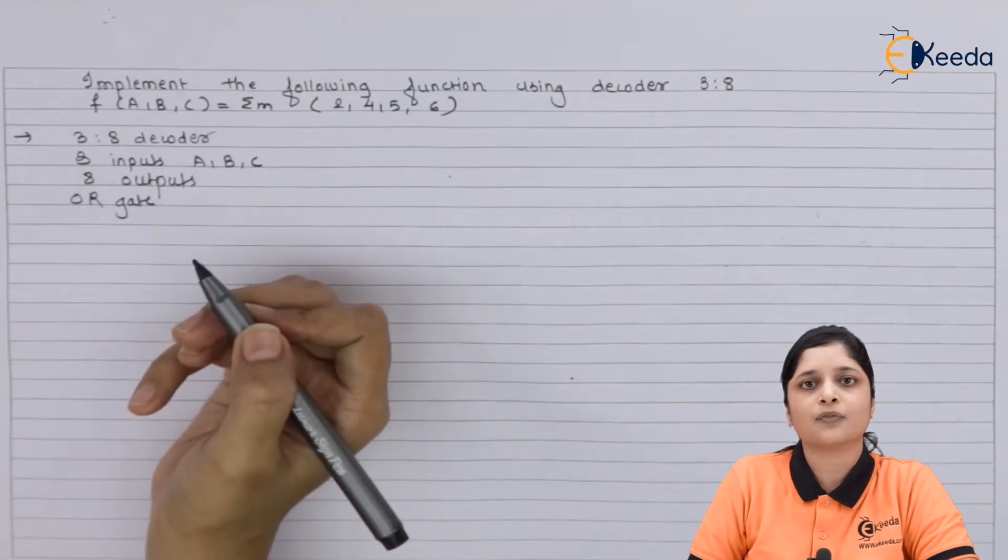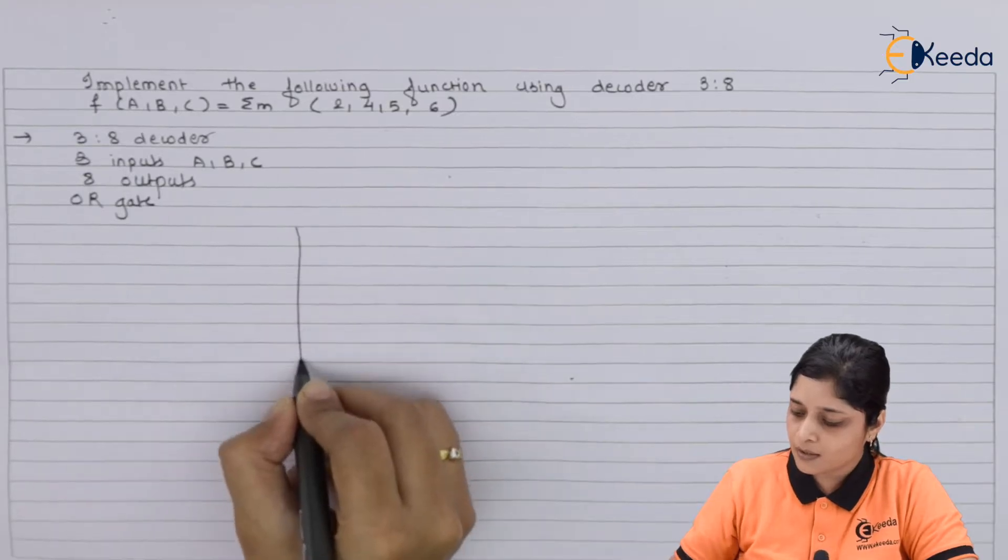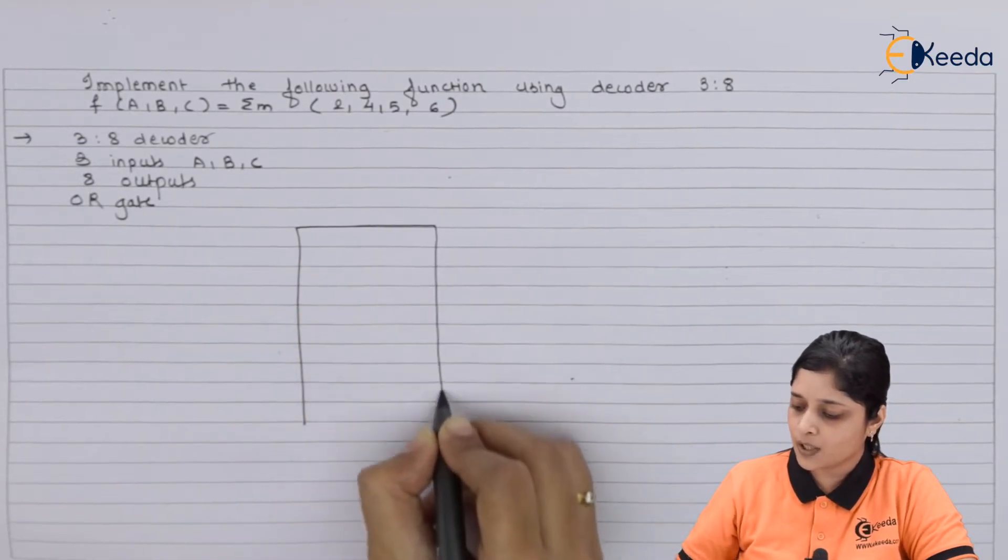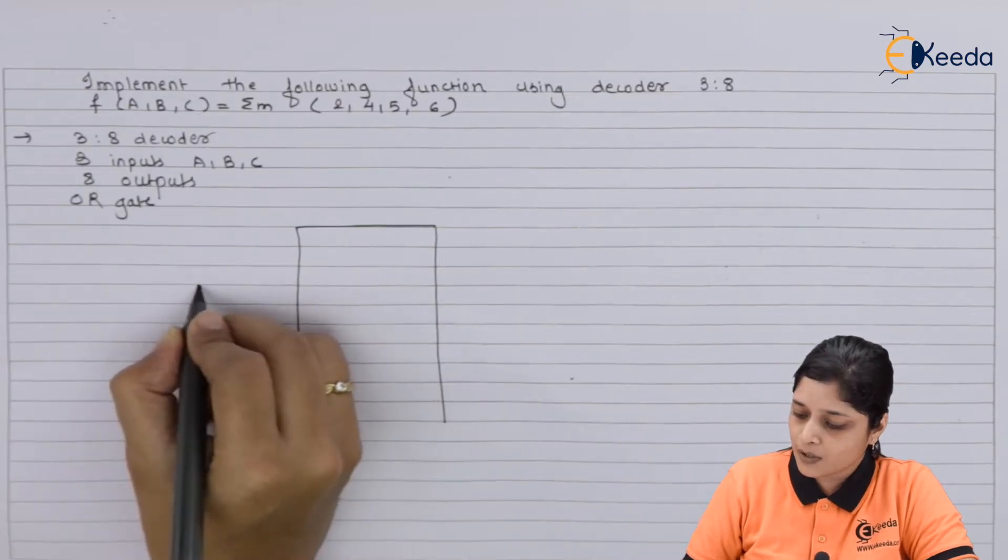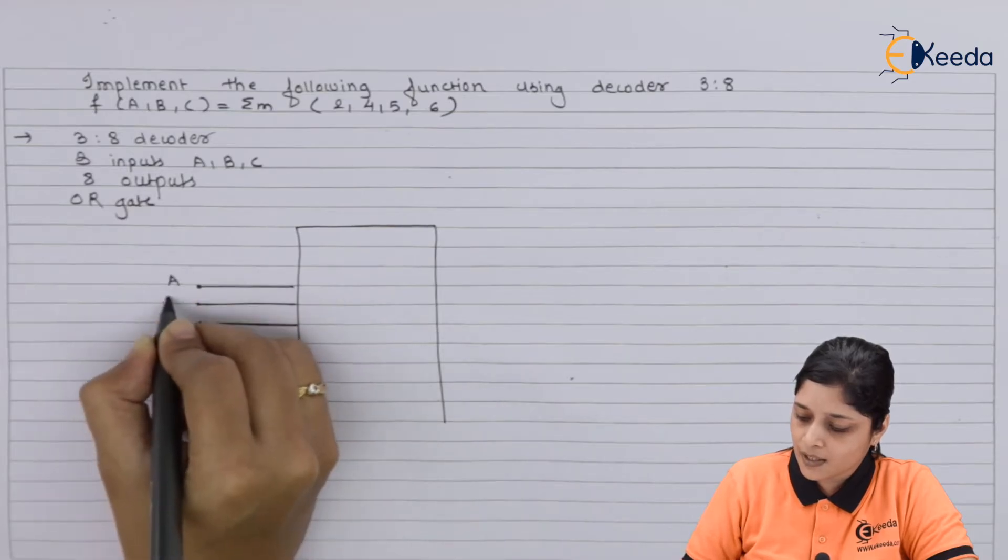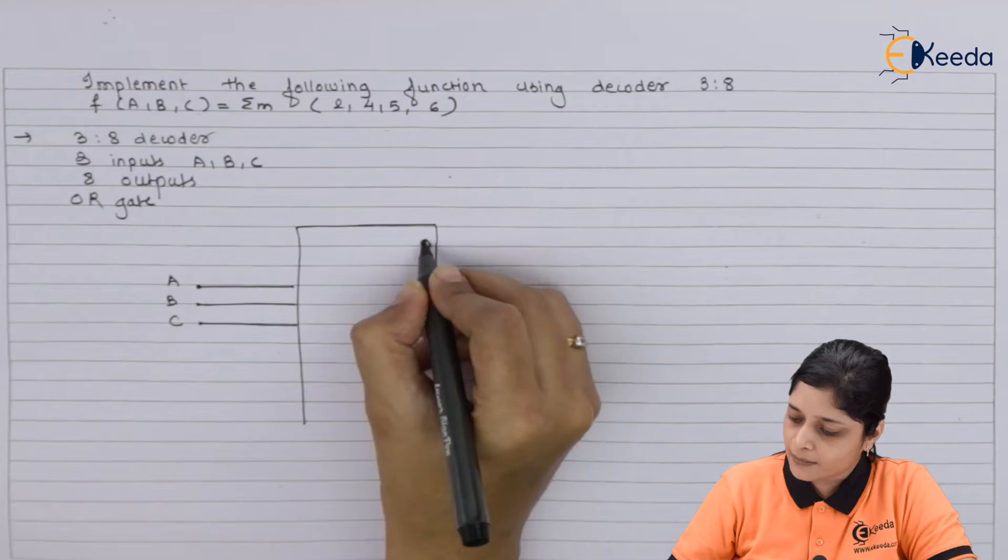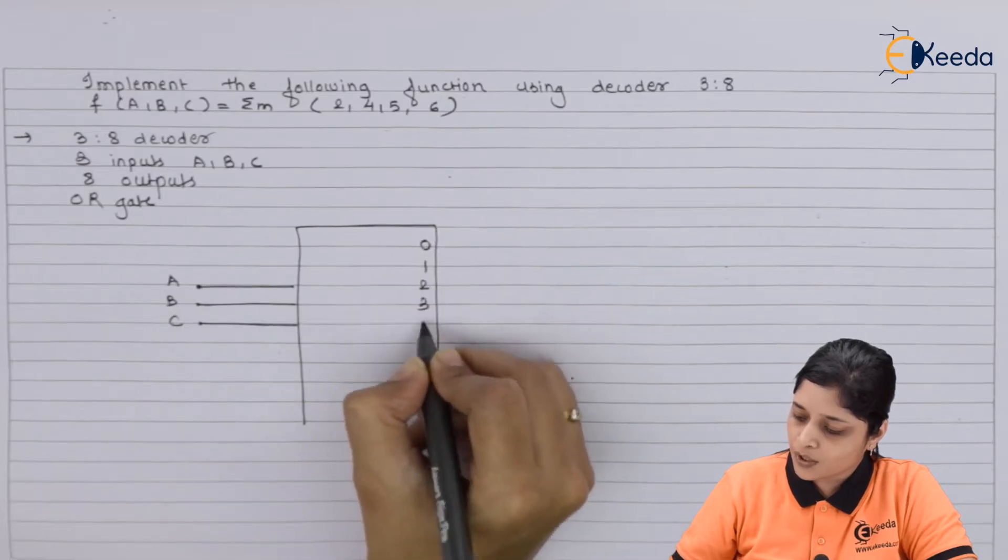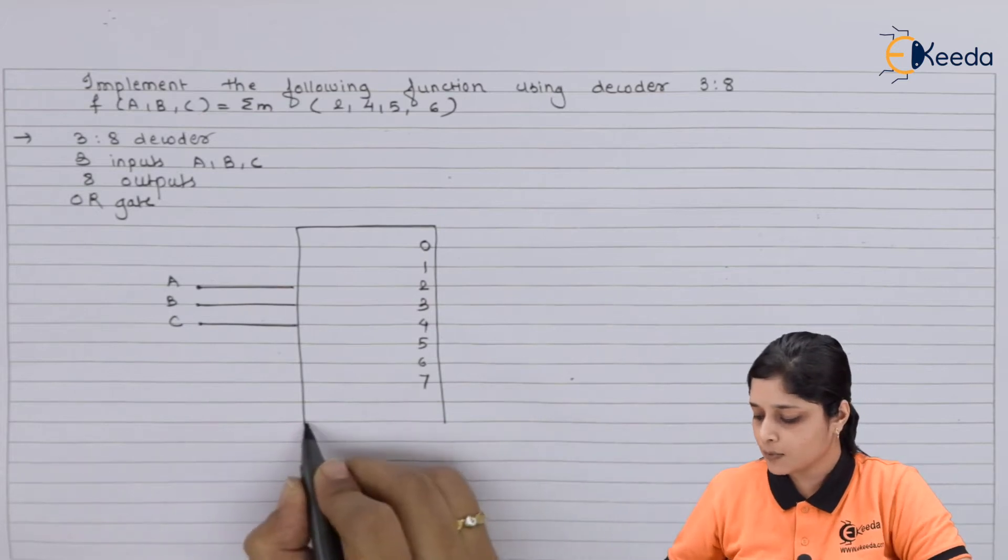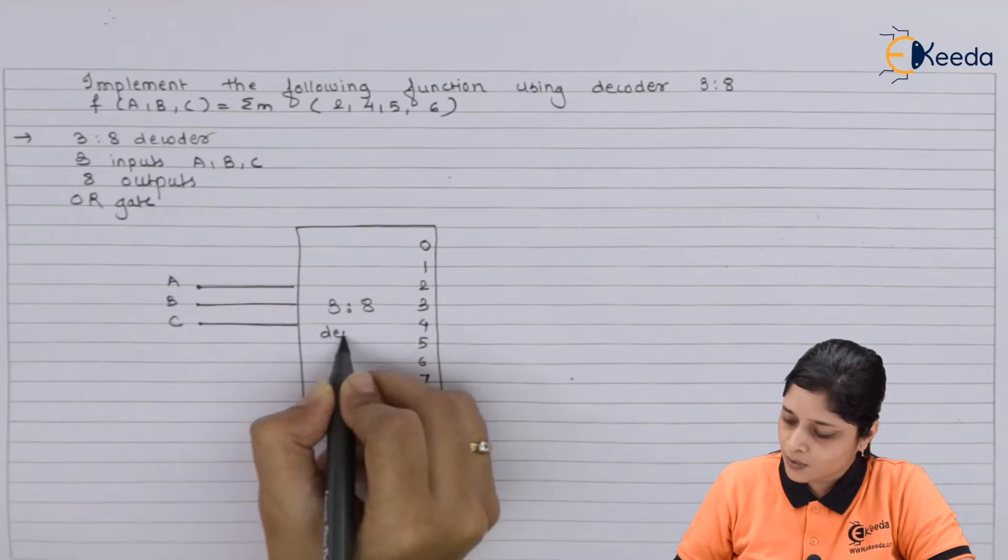So let's start with the realization of the decoder. We will draw here 3-to-8 decoder. 3-to-8 means how many input lines are present? Three input lines are present that are a, b, and c. And output lines are 8 means 0, 1, 2, 3, 4, 5, 6, 7. 0 to 7 are the output lines and you can write here 3-to-8 decoder.